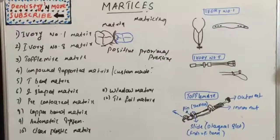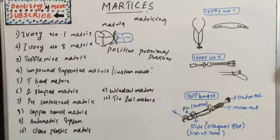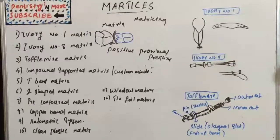The matrix should be non-reactive — it should not react or stick to the restorative material. It should be inexpensive and it should be easy to sterilize. These are the ideal requirements of a matrix.